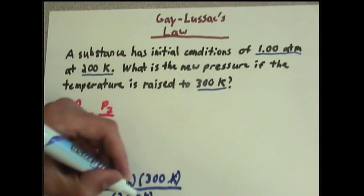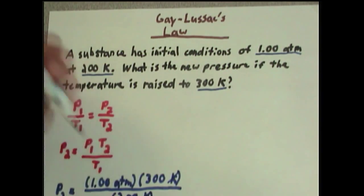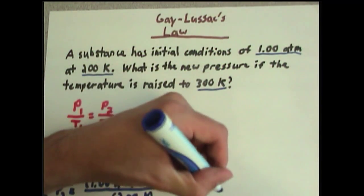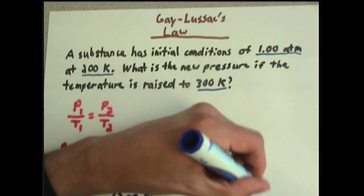P2 equals 1 atmosphere times 300 kelvins divided by 200 kelvins. And if you notice, the kelvins cancel out, leaving us with atmospheres, which is pressure, which is what we want in our answer. Calculating our answer will give us 1.5 atmospheres.